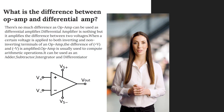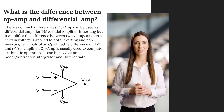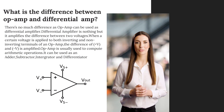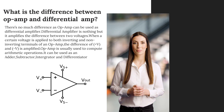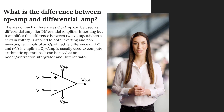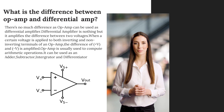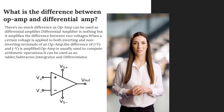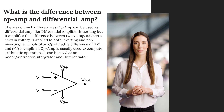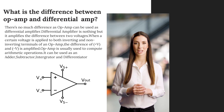There's not much difference, as an op-amp can be used as a differential amplifier. A differential amplifier amplifies the difference between two voltages. When a certain voltage is applied to both the inverting and non-inverting terminals of an op-amp, the difference between the positive and negative voltage is amplified.